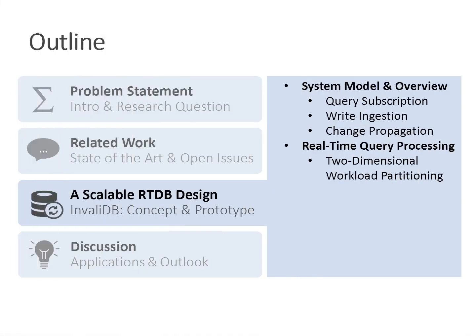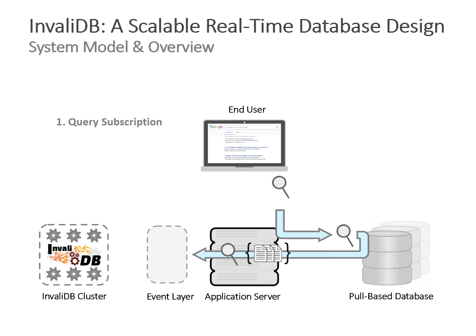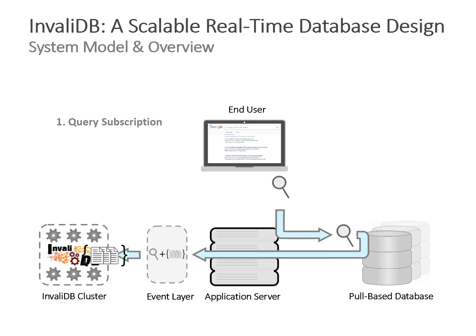In the next section we'll talk about the InvalidDB system model — how subscriptions and change notifications work and how the matching workload is distributed internally to achieve simultaneous read and write scalability. When an application registers a real-time query with InvalidDB, it sends the query to the app server, which executes it on the pull-based database. The result is not given directly to the user but rather to the InvalidDB cluster — sent to the event layer, which acts as a message broker.